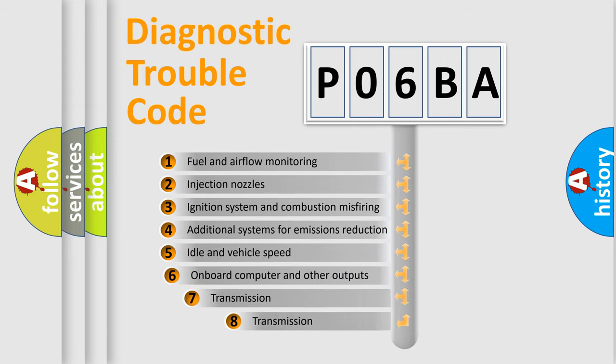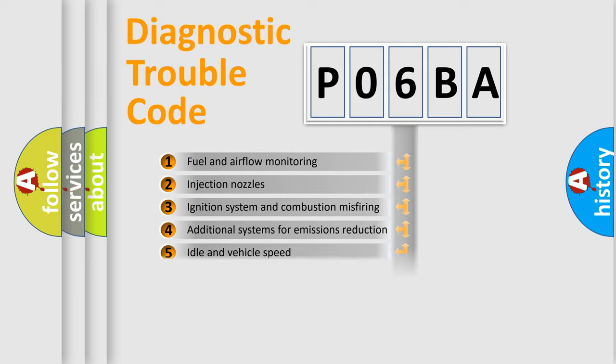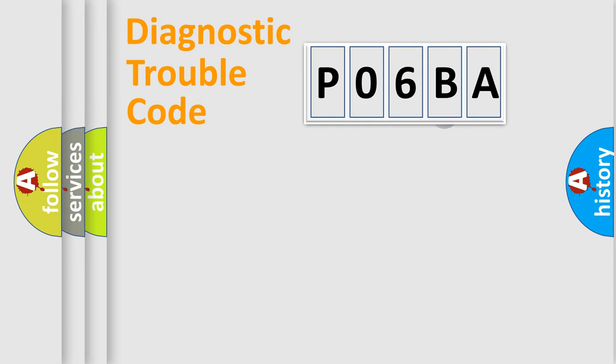The third character specifies a subset of errors. The distribution shown is valid only for the standardized DTC code.